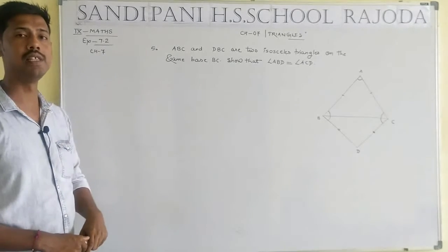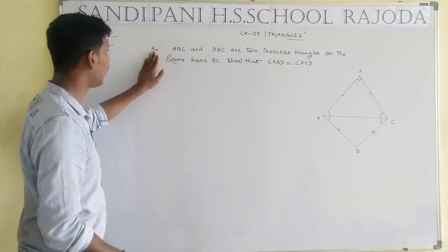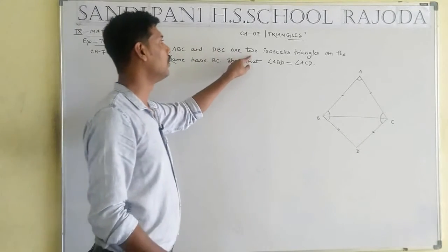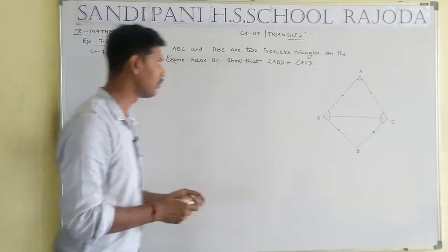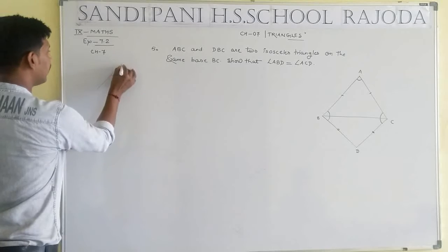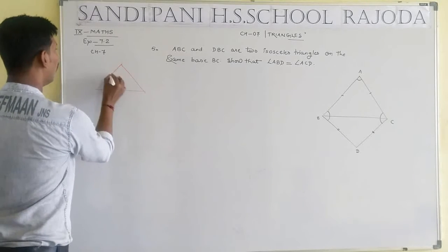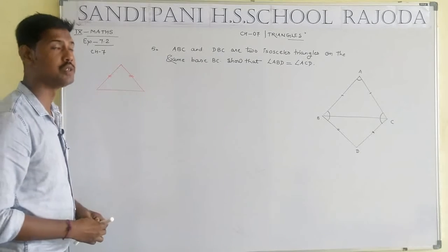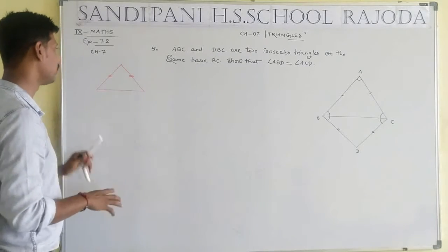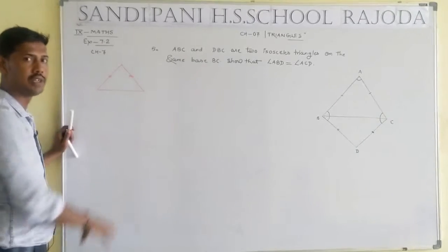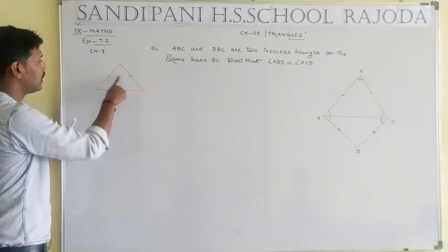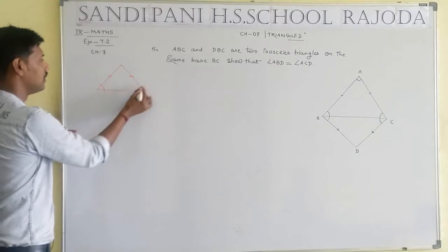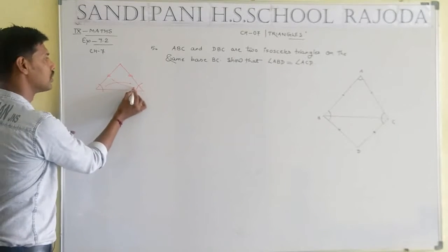Question number 5: Triangle ABC and triangle DBC are two isosceles triangles. What is the meaning of an isosceles triangle? In any triangle, if two opposite sides are equal, that type of triangle is known as an isosceles triangle. If two sides are equal, that means the corresponding angles are also equal.